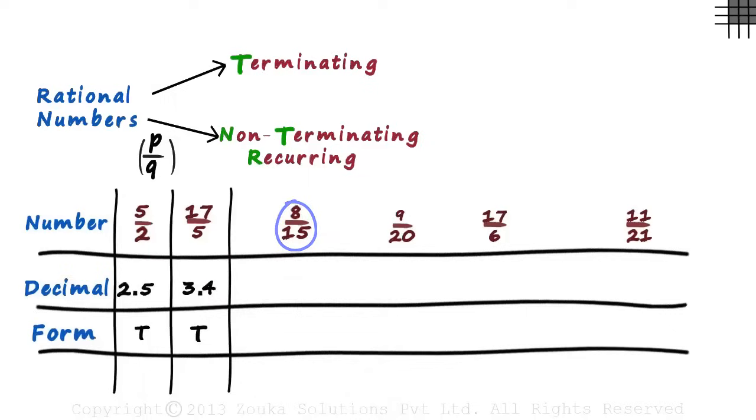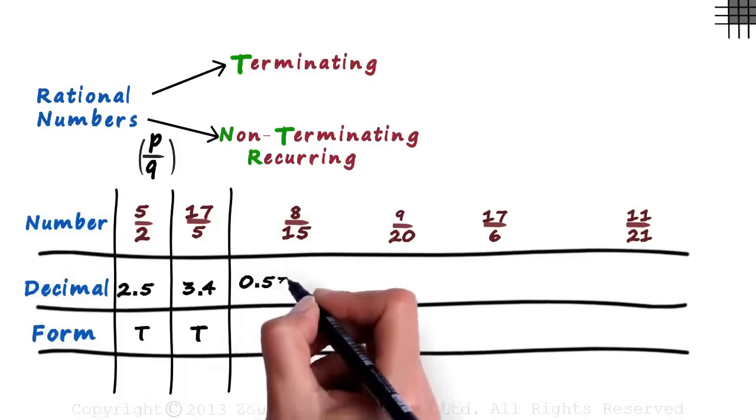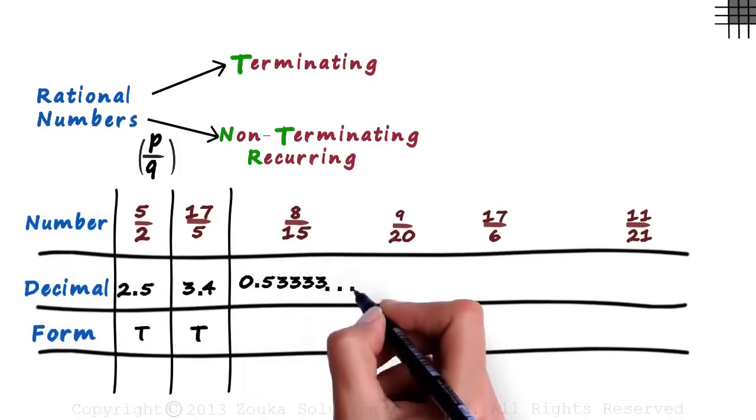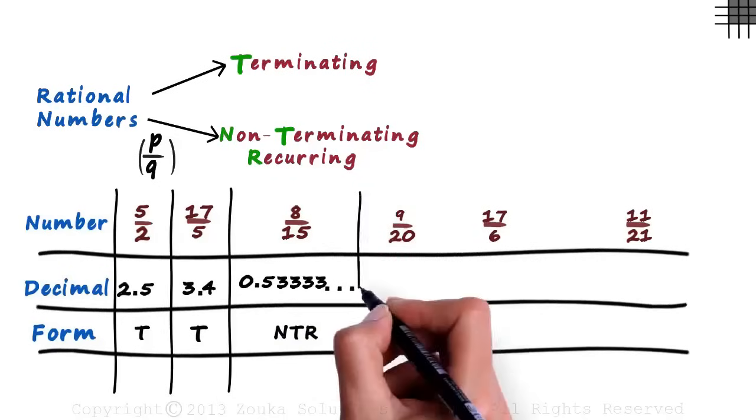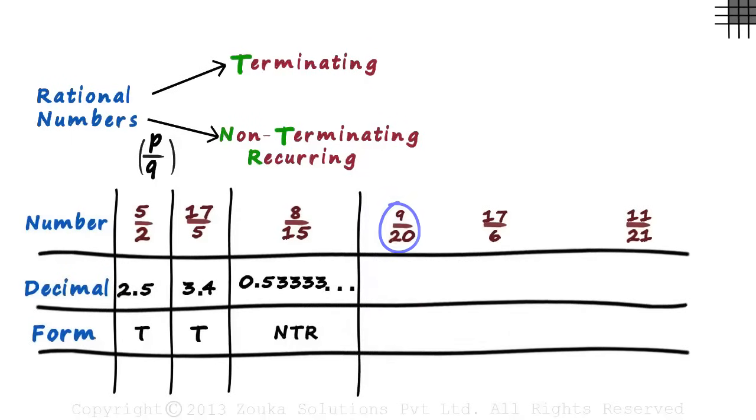8 by 15 equals 0.53333 and so on. It does not terminate. The digit 3 is repeated indefinitely. So we can say that it's a non-terminating recurring decimal. 9 by 20 equals 0.45 which is terminating.